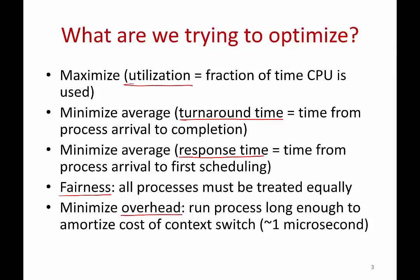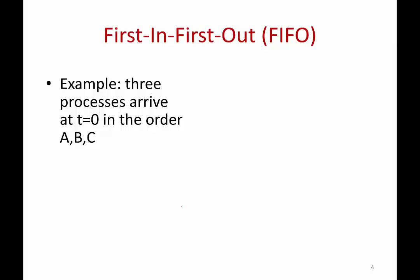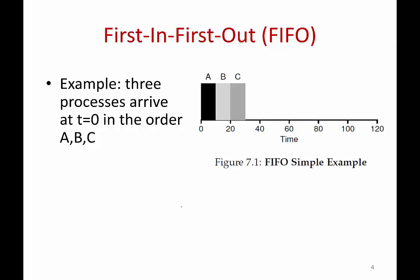These are all the goals of a scheduling policy. We'll look at a few simple policies, starting with the easiest — FIFO, first in first out. You keep all ready processes in a linked list and schedule from the beginning of the queue. Suppose three processes A, B, C arrive at time T=0 in that order and are placed in a queue. You schedule A first, then B, then C. It cannot get simpler than this.